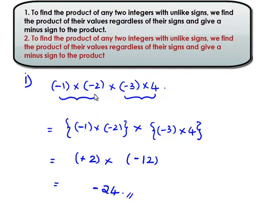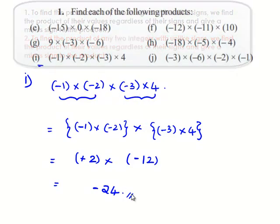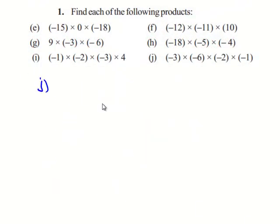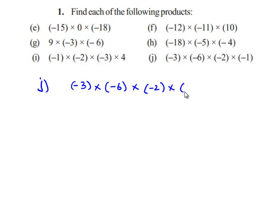Therefore, negative 1 multiplied by negative 2 multiplied by negative 3 multiplied by 4 gives negative 24. We will see the next problem. That is negative 3 multiplied by negative 6, which is multiplied by negative 2, which is multiplied by negative 1.